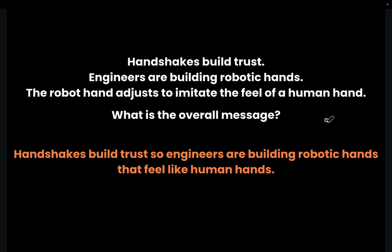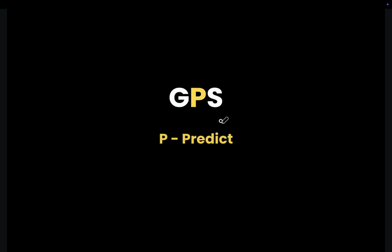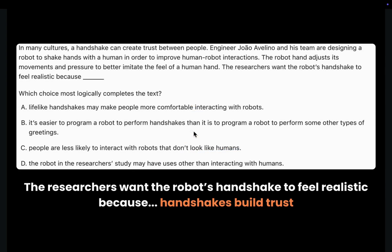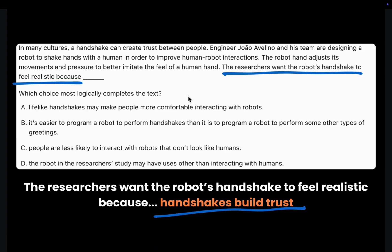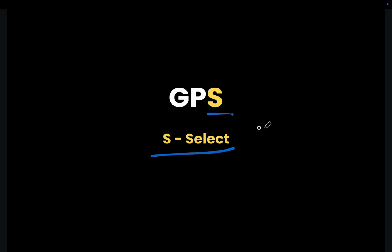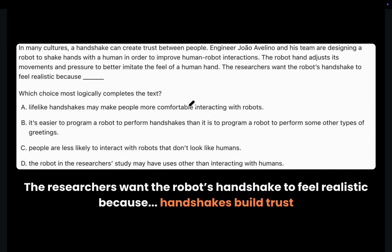Let's go back to the text and move on to the second letter in the GPS method. P stands for Predict, because we need to predict what we will put in the blank. The researchers want the robot's handshake to feel realistic because handshakes build trust. Now we will move on to the third and last letter in the GPS method. The S stands for Select, because we need to select the choice that matches our prediction.